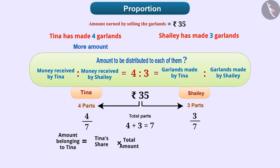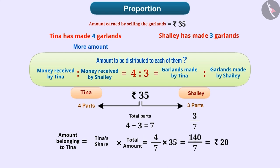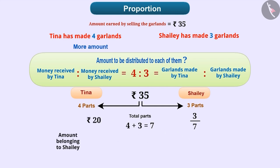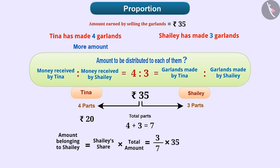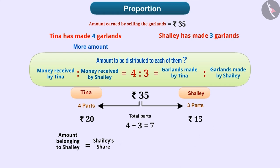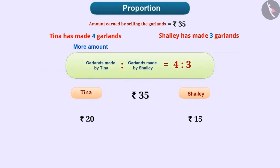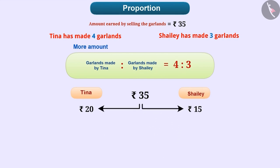So, Tina gets her share of the total amount, which is equal to 4 by 7 into 35, which is equal to 140 by 7, which is equal to Rs. 20. Similarly, Shelly gets her share of the total amount, which is equal to 3 by 7 into 35, which is equal to 105 by 7, which is Rs. 15. Thus, out of Rs. 35, Tina should get Rs. 20 and Shelly should get Rs. 15. Only then Rs. 35 can be divided in the ratio of garlands made by them.